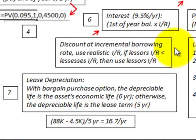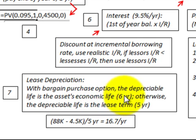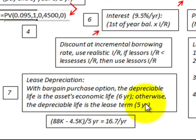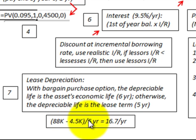For lease depreciation, if there is a bargain purchase option, the depreciable life is the economic life of the asset — in this case, six years. With a guaranteed residual value, the depreciable life is the lease term, which is five years. For our example, the capitalized amount of $88,000 less the guaranteed residual value of $4,500, divided by five years, gives annual depreciation of $16,700 per year.